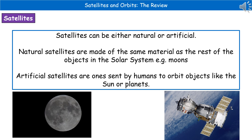Welcome to our review on satellites and orbits. When we're talking about satellites, we're talking about something that may either be natural or artificial. When we're talking about a natural satellite, this is things like the moons, as you can see in the bottom left. The key thing about natural satellites is that they're made from the same material as the rest of the objects in our solar system.